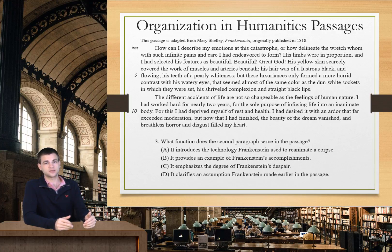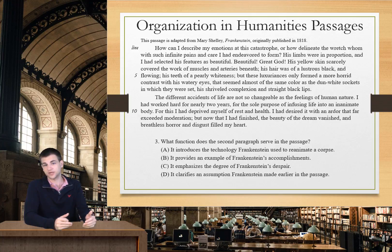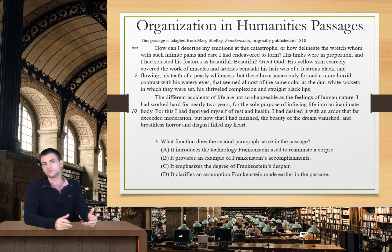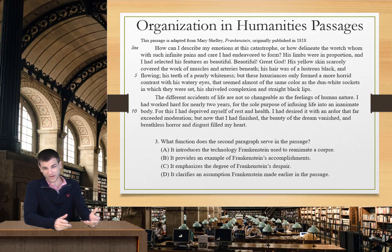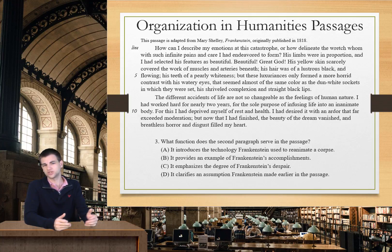A tells us that the second paragraph is going to be used as an introduction to the technology that Frankenstein used to reanimate a corpse. I don't think that's quite accurate. The narrator never mentions any of the technology he uses. He does mention the body, but that's not really part of any sort of technology. So A doesn't help us out, and we can eliminate that.